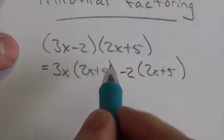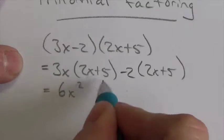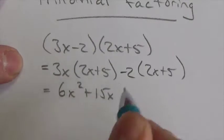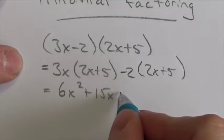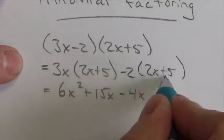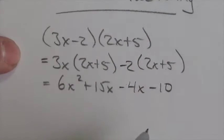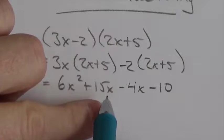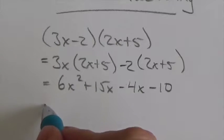3x gets distributed to those terms and we get 6x squared plus 15x when I distribute the 3x to those two. Negative 2 then gets distributed to these two terms. So we get negative 4x and then minus 10. Now, what causes the problems when we start factoring is that I now am going to put these two terms together. I'm going to combine them.